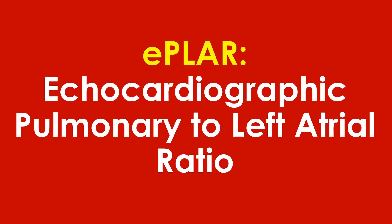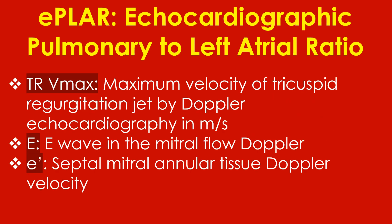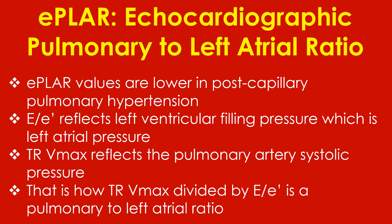Echocardiographic pulmonary to left atrial ratio, E-PLAR, is a simple echocardiographic estimation useful in differentiating pre-capillary from post-capillary pulmonary hypertension. E-PLAR is TRV max divided by the mitral E/E-prime ratio. TRV max is the maximum velocity of the tricuspid regurgitation jet by Doppler echocardiography in meters per second. E-wave is the mitral flow Doppler wave, and E-prime is the septal mitral annular tissue Doppler velocity. E-PLAR values are lower in post-capillary pulmonary hypertension. E/E-prime reflects left ventricular filling pressure, which is left atrial pressure, while TRV max reflects the pulmonary artery systolic pressure — that is how TRV max divided by E/E-prime represents a pulmonary to left atrial ratio.